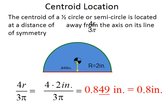Here, for example, with a diameter of 4 or radius of 2, if the origin is at the left lower corner, x-bar is 2. The distance from the diameter to the y-coordinate is 0.849 inches.